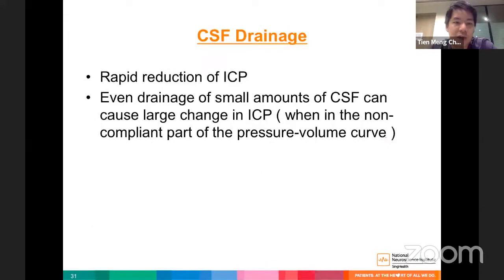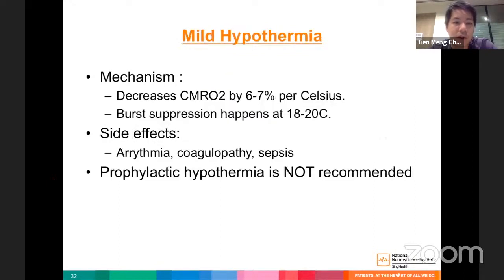CSF drainage can achieve rapid ICP reduction. Because patients with raised ICP are in the non-compliant portion of the pressure-volume curve, even very small amounts of CSF drainage can cause a large change in intracranial pressure. Hypothermia reduces CMRO2 by 6–7% for every degree drop in body temperature.